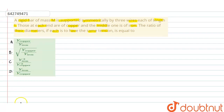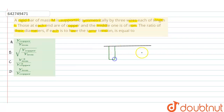Suppose we have a supported beam like this. Three wires are connected — at each end we have copper wires, and these are connected like this. The end wires are made of copper.